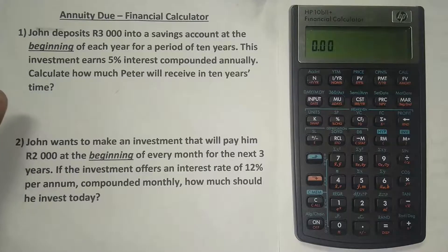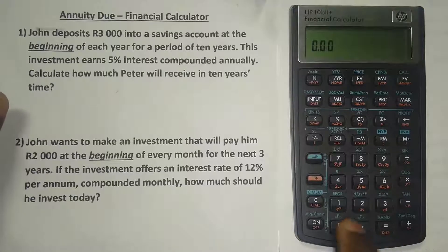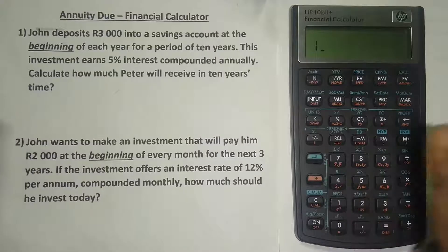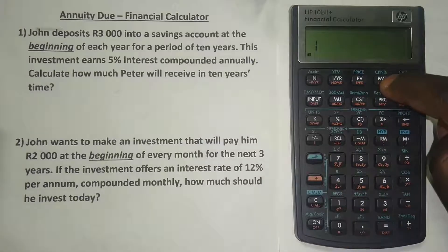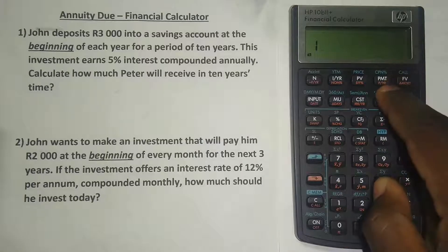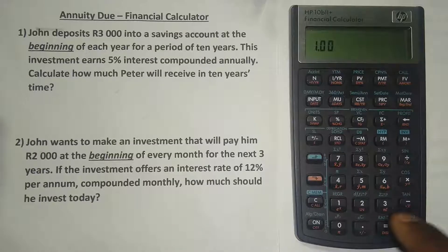Now the compounding also matters here because this calculator by default is compounded monthly. We need to change that to annually. We just press 1, because we want it to be annually — one payment per year — then we press the orange button and then we press PMT, where it's written P/YR. Now it's one payment per year and the calculator knows that.